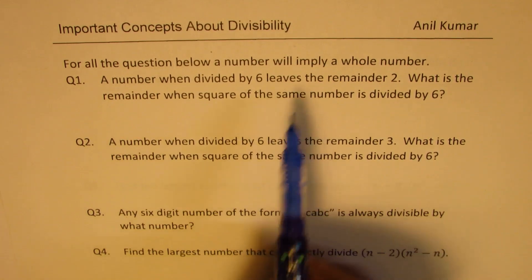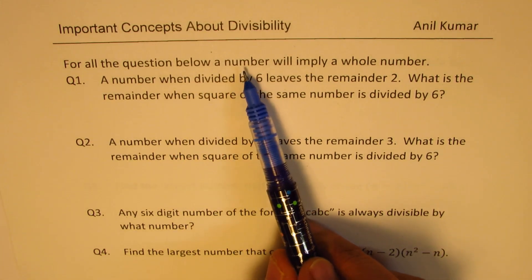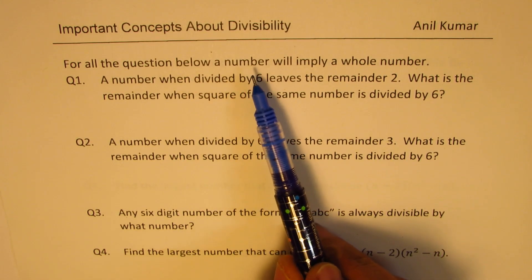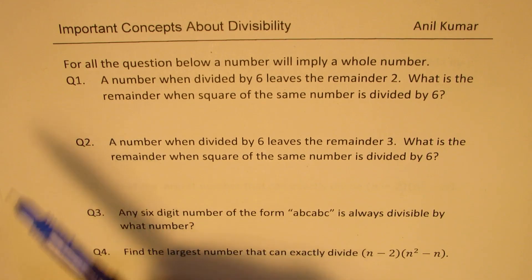In all these questions, when we say there is a number, we mean a whole number — 0, 1, 2, 3, 4, and so on.